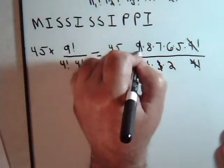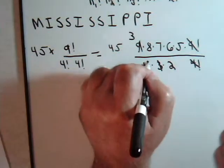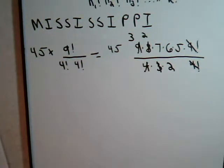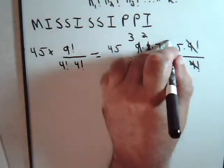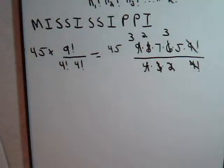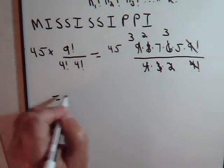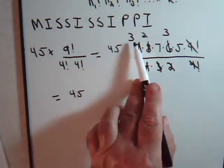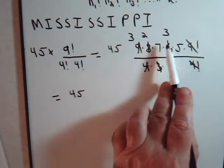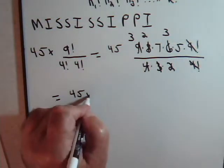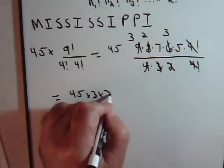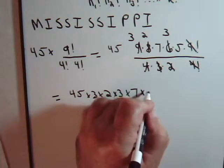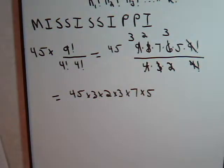3 goes into 9, 3 times. 4 goes into 8, 2 times. And 2 goes into 6, 3 times. So our answer will equal 45 times 3, times 2, times 7, times 3, times 5, like this.